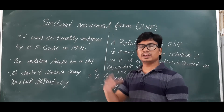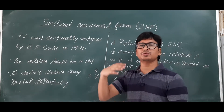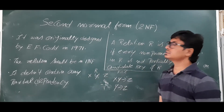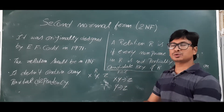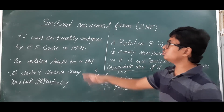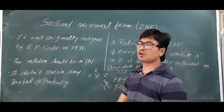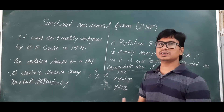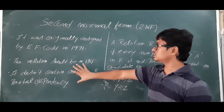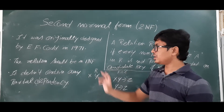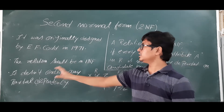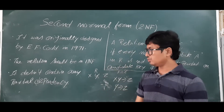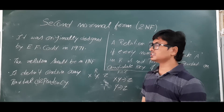Good morning students. In the earlier video we discussed about 1NF. In this video we will discuss about Second Normal Form, or 2NF. It was originally designed by E.F. Codd in 1971. When we say that a relation is in 2NF, it should satisfy two conditions. The first condition is that the relation should be in 1NF.